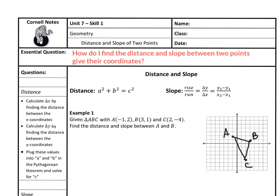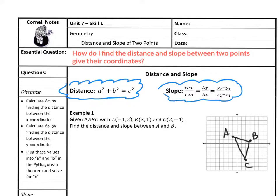Coordinates are just the x, y values of their points on the graph. The first thing we're going to do is go through and talk about the formulas you're going to use. For distance, you're always going to use the Pythagorean theorem. You're going to be making a right triangle on the graph and finding the rise and the run for slope.